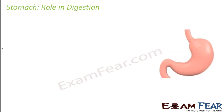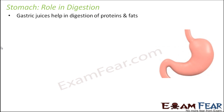Let us see the role of gastric juices in digestion. Gastric juices help in the digestion of proteins and fats. As we discussed, in the oral cavity digestion of carbohydrates took place. In a similar way, in the stomach digestion of proteins and fats will take place — not much digestion of carbohydrates. So here only proteins and fats will be taken care of.